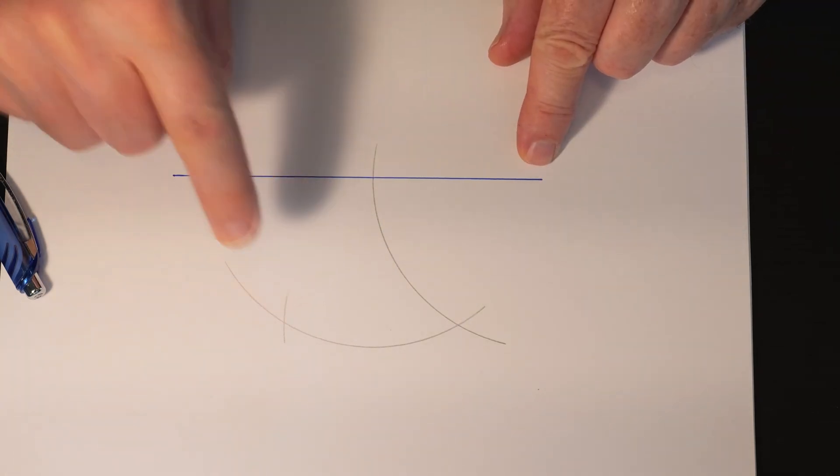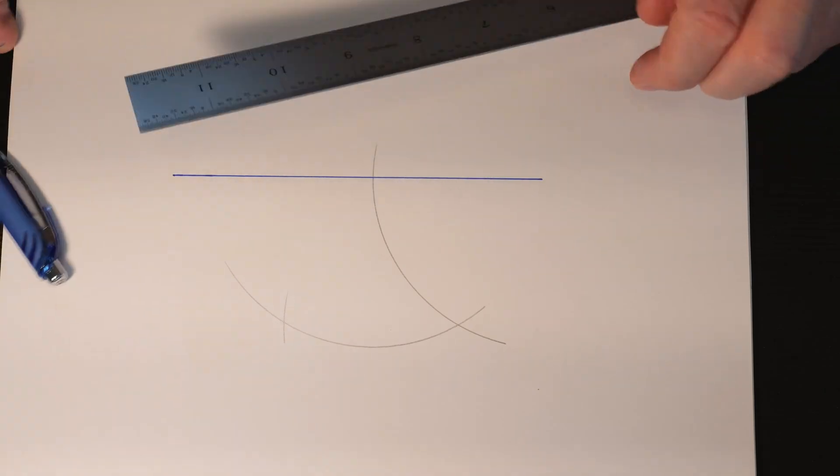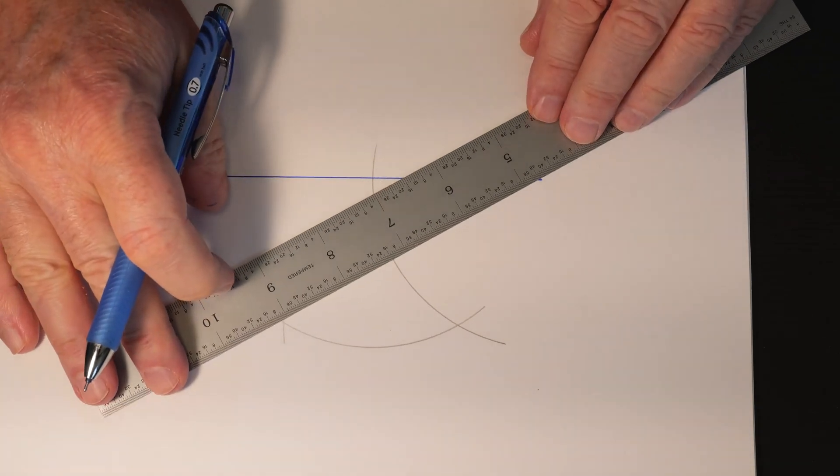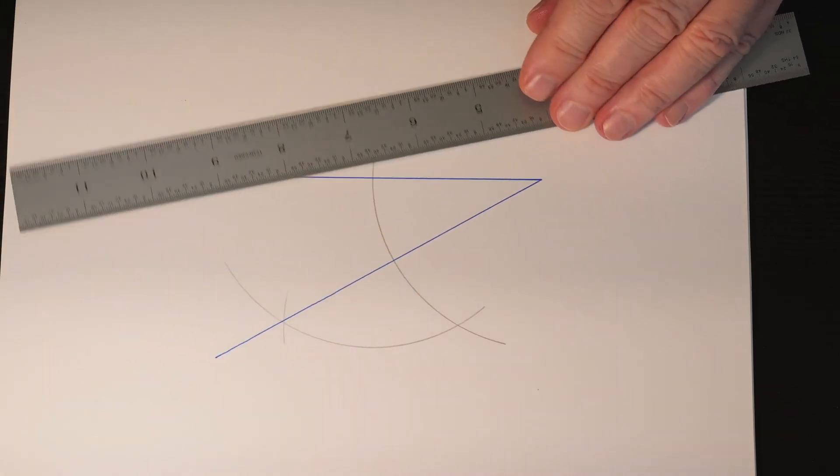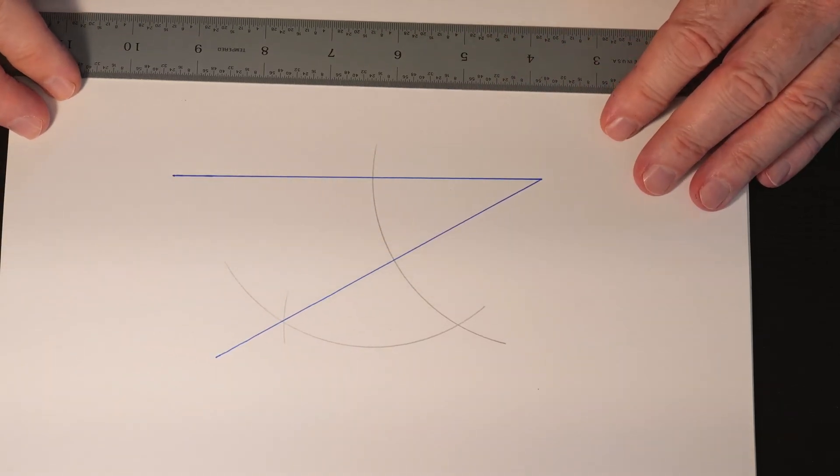Connecting that intersection with the endpoint of my line will give me 30 degrees. If you don't believe me, give it a shot and check it with a protractor.